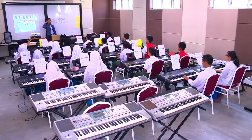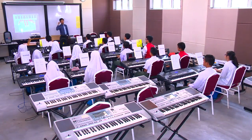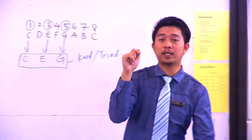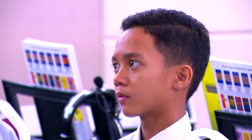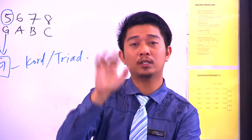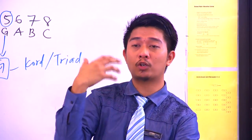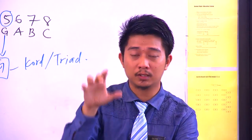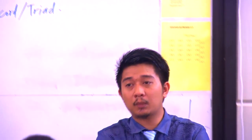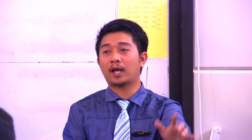Baiklah, kita akan cuba buat untuk cord C major. Tapi saya nak awak tekan satu-satu nod. Contohnya, saya sebutkan nod C - tekan, nod E, nod G. Apabila saya cakap bunyikan cord C major, baru kita tekan serentak. Boleh kita cuba? Yang pertama, jari pertama berada di kedudukan C tengah, middle C. Boleh kita bunyikan C. One, two, three, four.